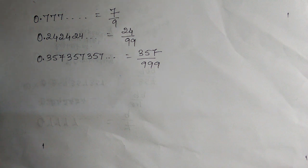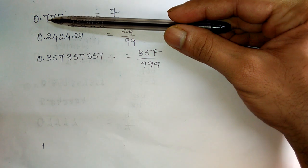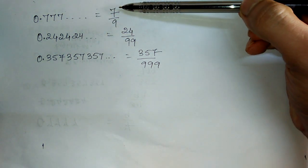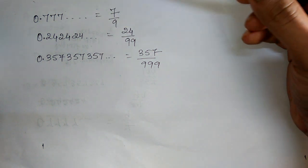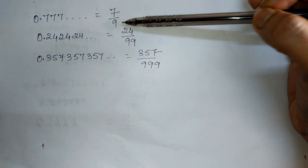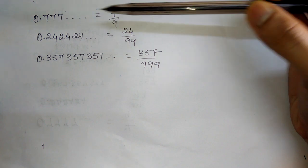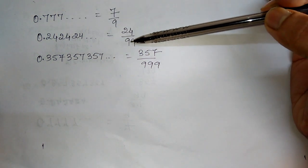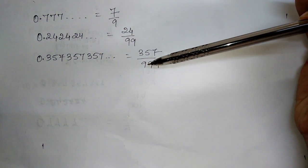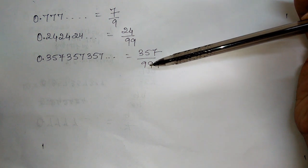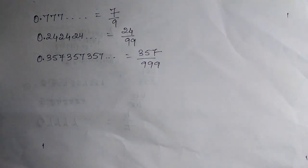Let us generate a formula by seeing these three examples. The repeating number 7 is in the numerator, and in the denominator, since 7 is a one-digit number, the denominator is the maximum one-digit number, which is 9. Here 24 is repeating — it's a two-digit number, so the maximum two-digit number is 99. Likewise, 357 is a three-digit number, so the denominator is 999.